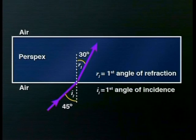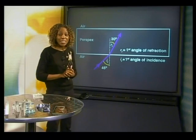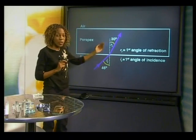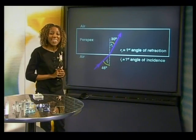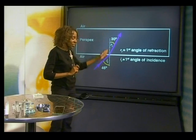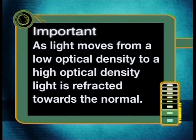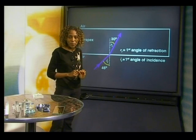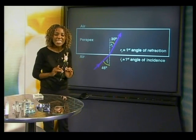Let's consider the first boundary the light hits in more detail. Comparing the angle of incidence with the angle of refraction, the angle of incidence is bigger than the angle of refraction, so the light moved closer to the normal. Therefore, as light moves from a low optical density to a high optical density, we say that the light is refracted towards the normal — the angle gets smaller. This happens when the speed of light decreases.